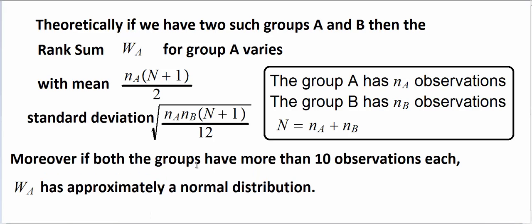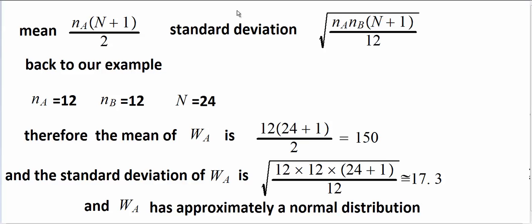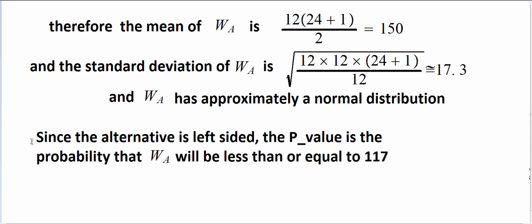And in addition, if both the groups have more than 10 observations, which they do in our example, they had both 12 each, then this will vary approximately according to a normal distribution. So back to our values, both the samples had 12 observations in each. This is the mean of all possible values of W_A and this is the standard deviation. So if we substitute these values in, then this value will come out to be 150. And this will be, I just plugged in the values and computed it, it's 17.3.